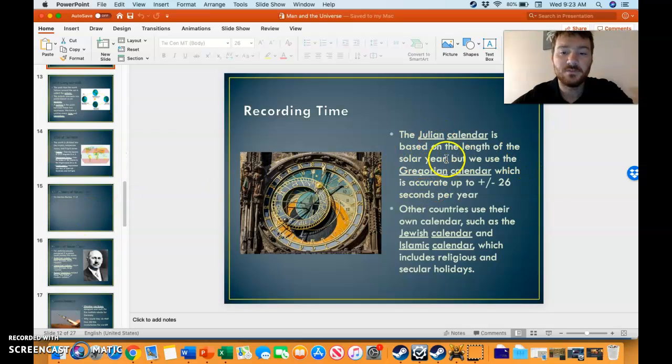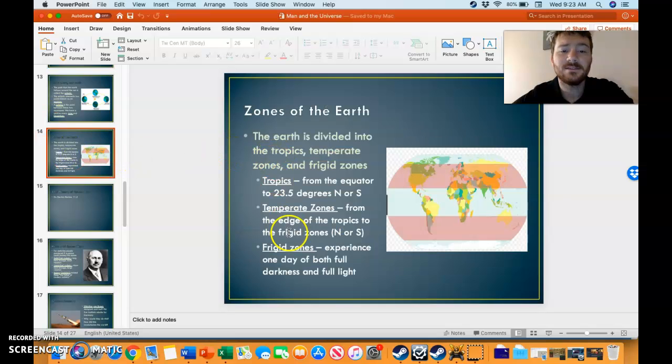Lots of different calendars from Julian to Gregorian to the Jewish to Islamic. Lots of different places and zones in the earth. You have the tropics, which experience very few temperature changes. You have the temperates, which have a winter and a summer. Imagine not having a winter and a summer, that'd be terrible.